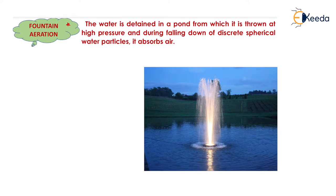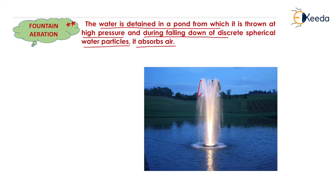The next method is fountain aeration. In fountain aeration, the water is detained in a pond from which it is thrown at high pressure to a particular height. During the falling down of discrete spherical water particles from top to bottom, the particles absorb all the atmospheric oxygen and bring it into the pond. This falling water causes aeration of the pond. This is known as fountain aeration because the aeration is carried out by a fountain process.